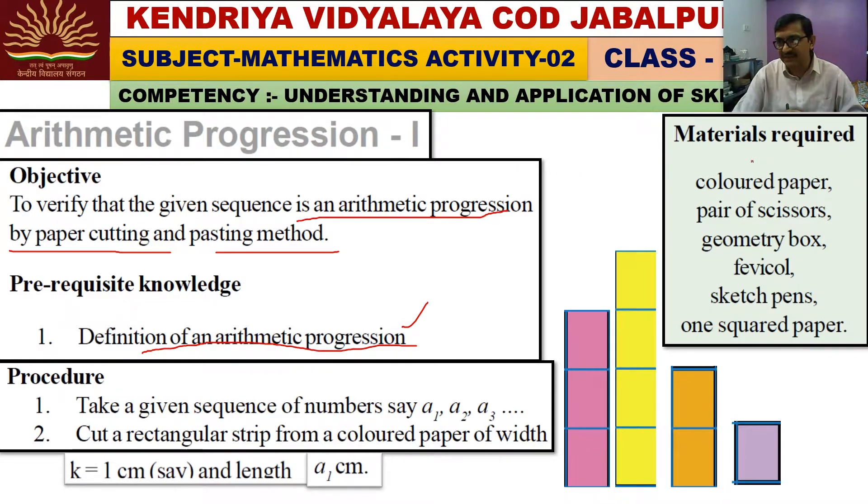To complete this activity we need some materials. Material required is colored paper, a pair of scissors, a geometry box, a fevicol, sketch pens, and one squared paper. If you don't have squared paper, you can use graph paper.